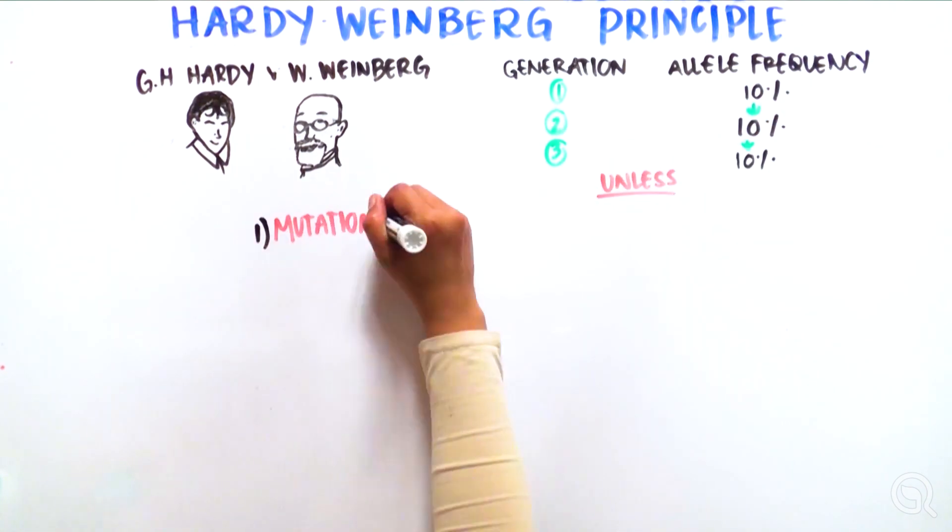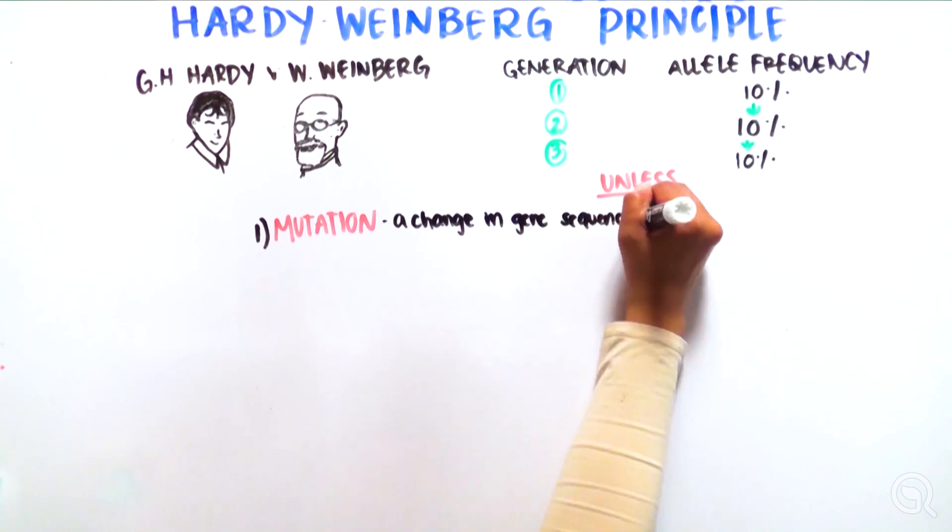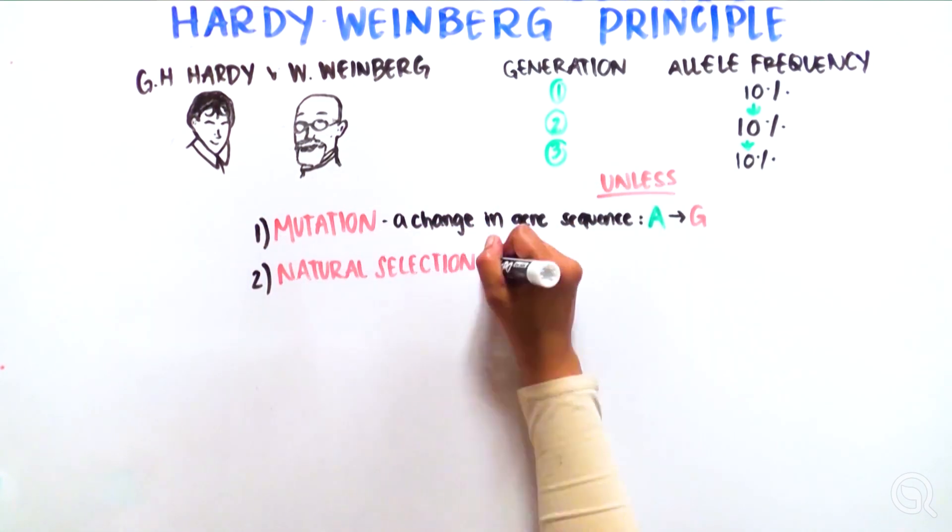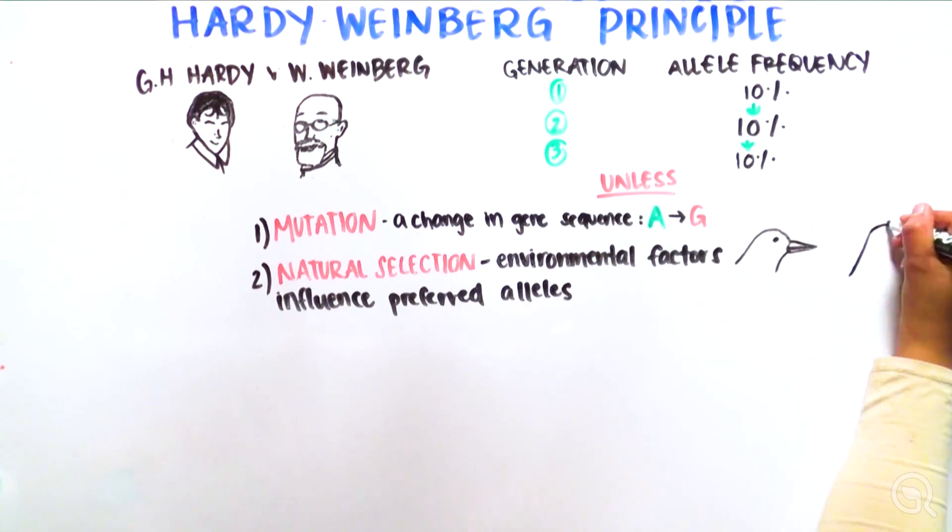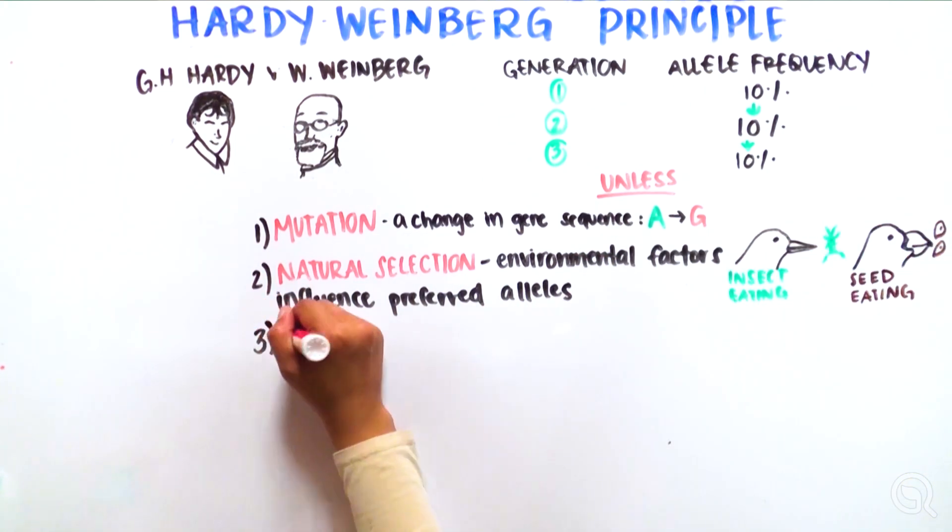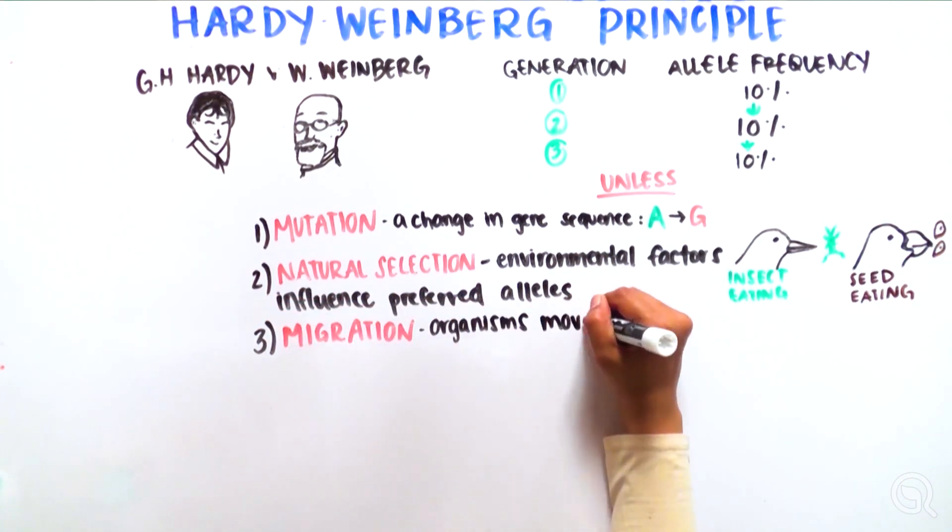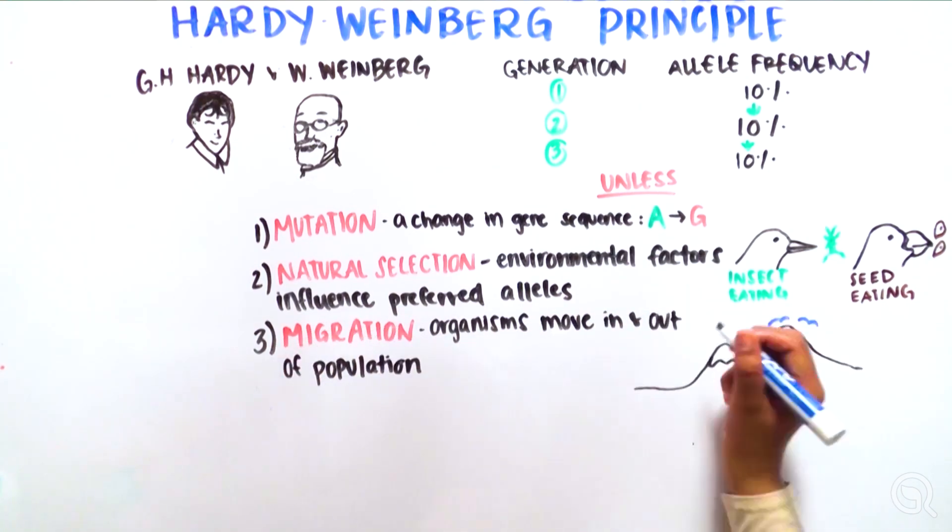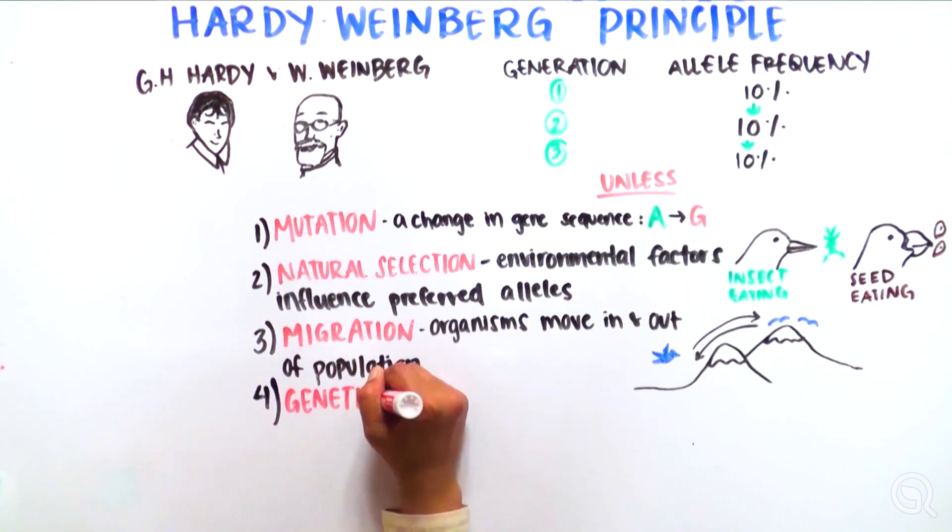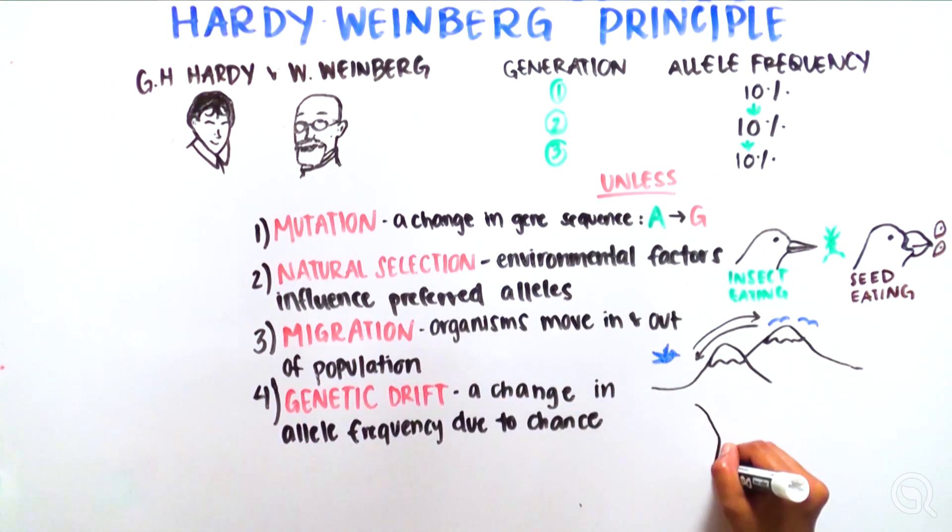Such as mutation, which is a change in the gene sequence; natural selection, which is environmental factors influencing which alleles are more preferred; migration, when organisms move in or out of a population; and genetic drift, a change in allele frequency due to random chance.